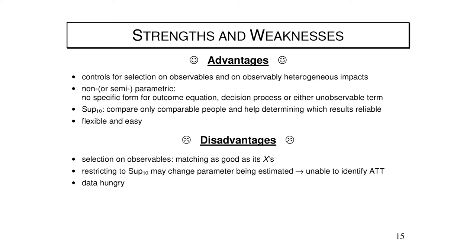Disadvantages: the selection-on-observables assumption is in general quite strong. Matching, like regression, is only as good as the covariates it uses — you need a strong case that no confounders have been omitted. Restricting estimation to the common support may change the parameter being estimated: you may only get the ATT for treated units that fall within common support, not the full set of treated, yielding an internally valid but not externally valid parameter. And you need abundant, high-quality data since the method is nonparametric.